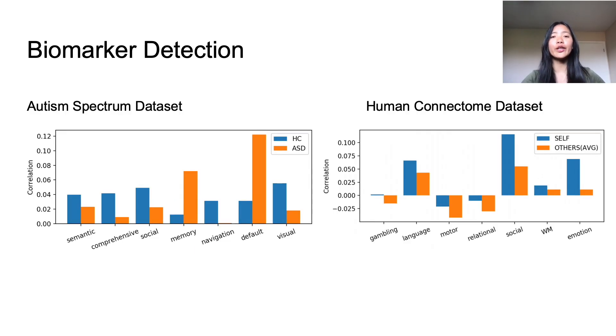First, we will take a look at the ASD dataset on the left. Based on the ROIs identified from the pooling layer, the researchers graph their correlation to functional keywords which are labeled along the x-axis. The blue bars represent the healthy control group and orange bars represent the autistic group. Because the identified ROIs are able to distinguish between the biological processes that occur between the two groups, they are considered biomarkers. We can see that the ROIs that correlate to social communication, visual perception, and comprehension are much stronger in the control group compared to autistic individuals. However, the biomarkers related to memory and default are much stronger in ASD individuals.